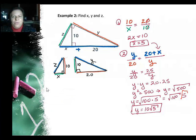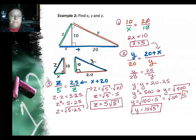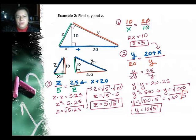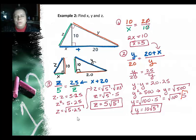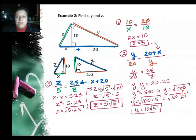Last, we need to find Z. I have Z on the original triangle and the triangle on the lower left, so that's where my proportion comes from. Z is green on one triangle and blue on the other, so I'll use the green and blue sides. Z is to five — now I know X is five — as twenty-five is to Z. Cross multiplying: Z squared equals five times twenty-five. Taking the square root, since twenty-five is a perfect square, Z equals the square root of five times the square root of twenty-five, which is five. So Z equals five times the square root of five.